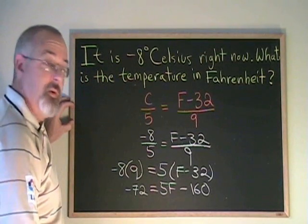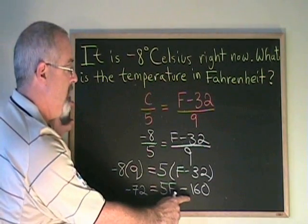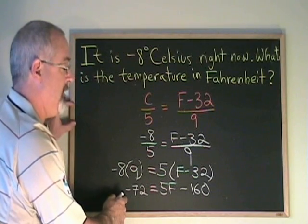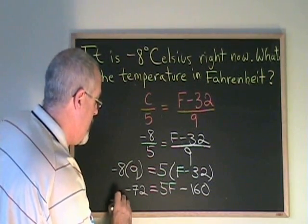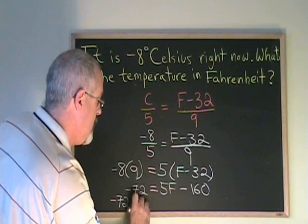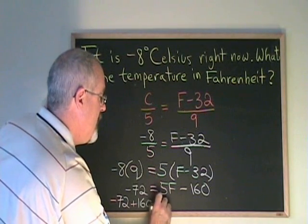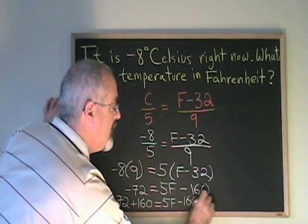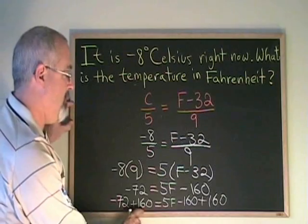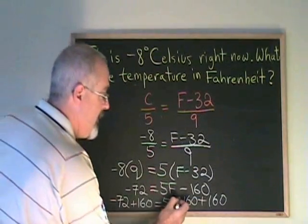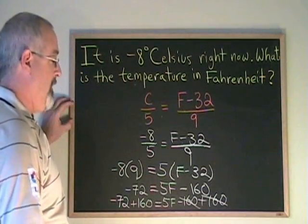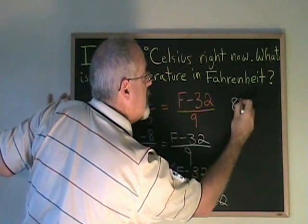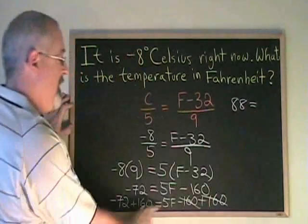Now using my usual algebra skills, I am going to move the minus 160 to the left of the equals. I am going to add 160 to both sides. I get minus 72 plus 160 equals 5F minus 160 plus 160. I have added 160 to both sides. These cancel and I end up with minus 72 plus 160, which is equal to positive 88 equals 5F.